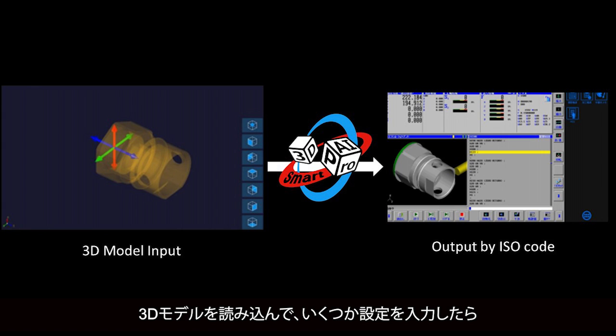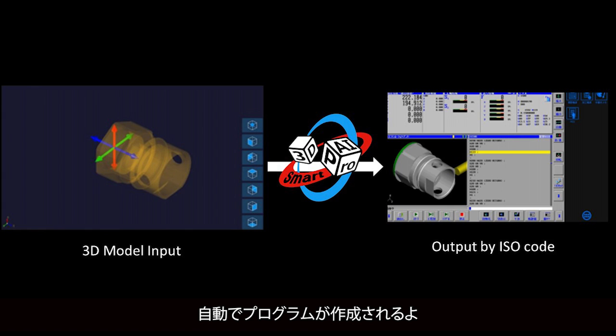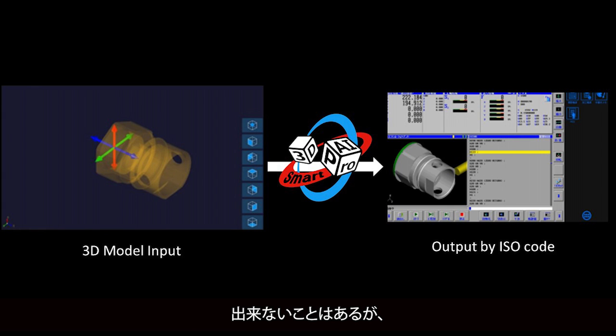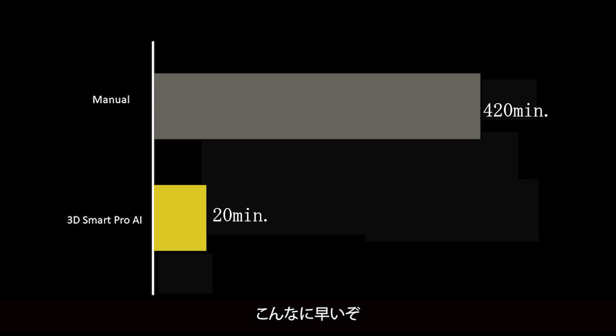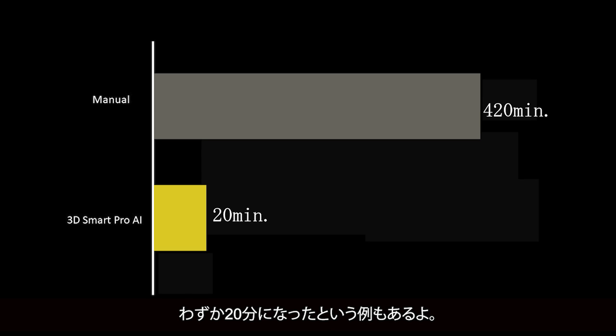Load a 3D model, enter a few settings, and the program is automatically created. Of course, there are things that can and cannot be done, but it's so much faster. In one case, a 420-minute programming process turned into a mere 20 minutes.